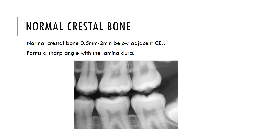The normal crestal bone is about 0.5 to 2mm below the adjacent CEJ and forms a sharp angle with the lamina dura, as can be seen in the image shown here of a healthy periodontium on radiograph.